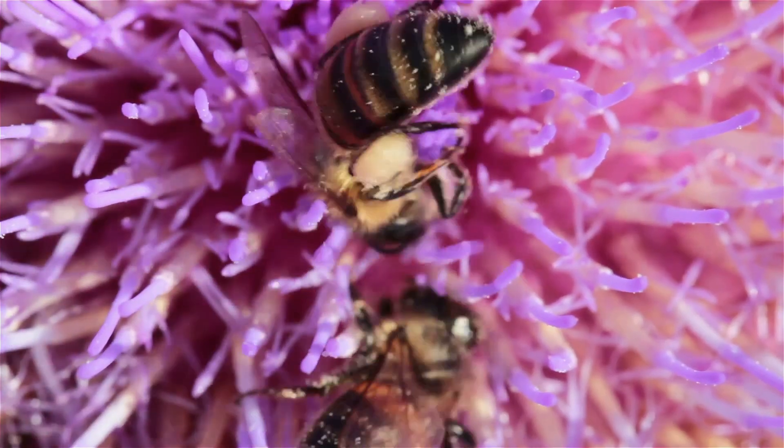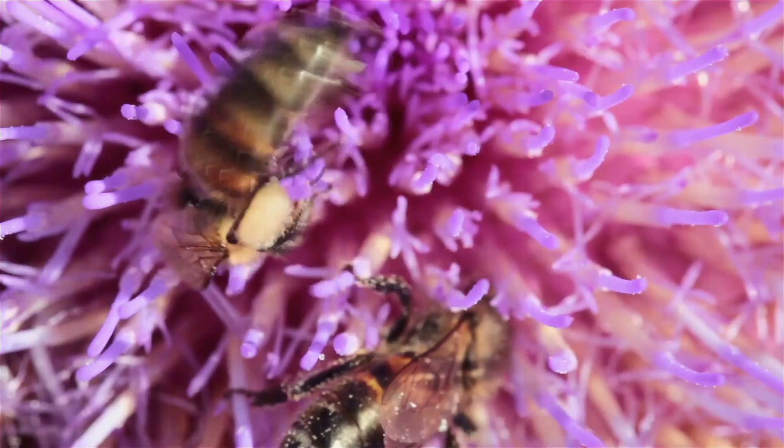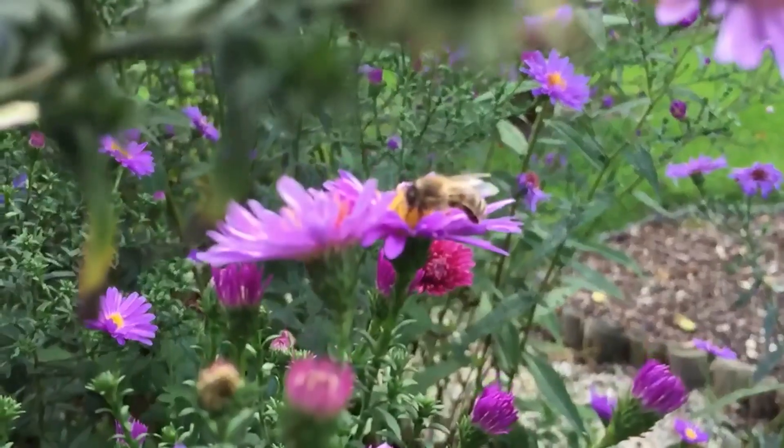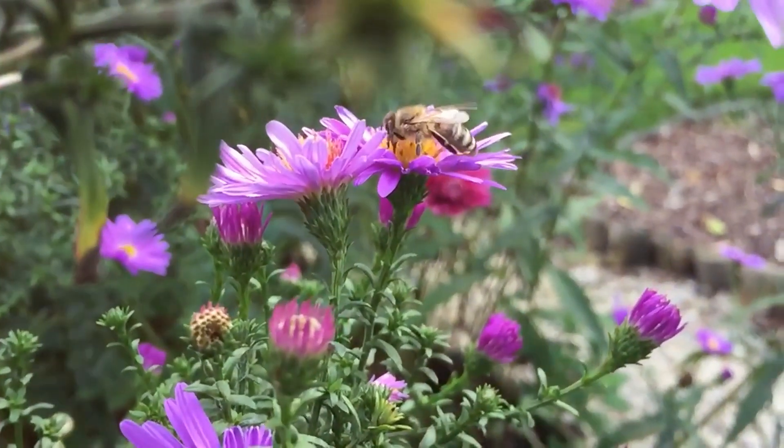On the other side of the spectrum beyond violet lies the realm of ultraviolet light, light invisible to us but detectable by bees. This hidden world guides their navigation and reveals patterns on flowers that aid in pollination.